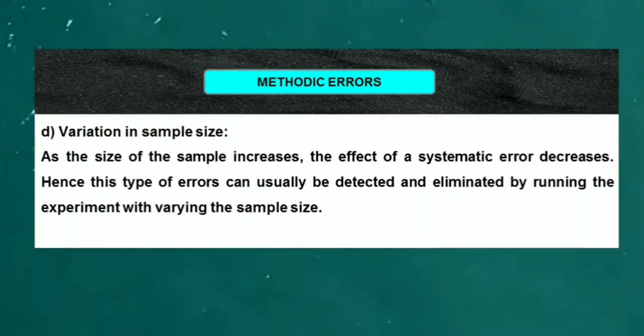Finally, variation in sample size: As the size of the sample increases, the effect of systematic error decreases. Hence, this type of error can usually be detected and eliminated by running the experiment with varying sample sizes.